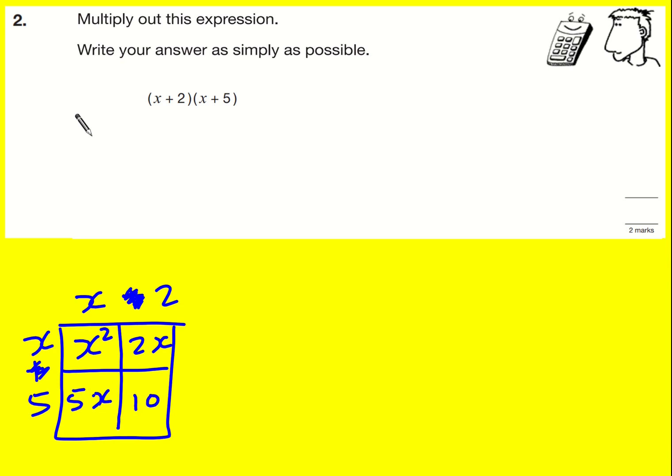So then I could write that down. I could write down x squared plus 2x plus 5x plus 10, and it asks me to write it as simply as possible. So I can write that as x squared plus 7x plus 10 because I can combine like terms. I can't combine them any further than that.